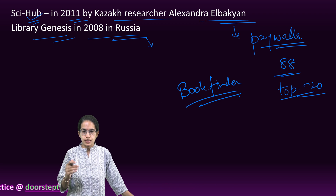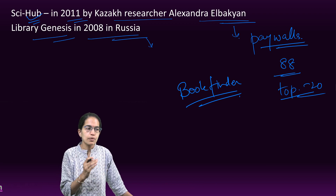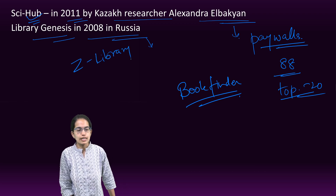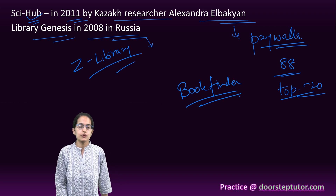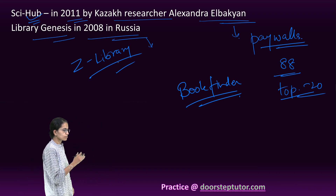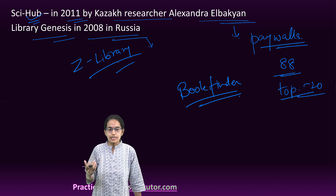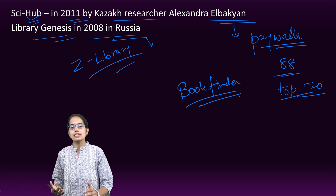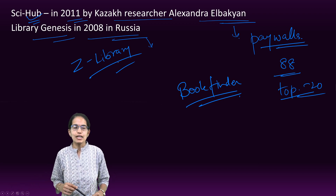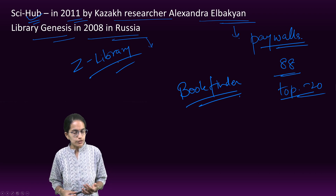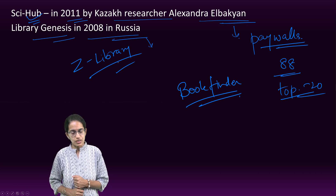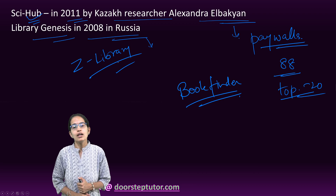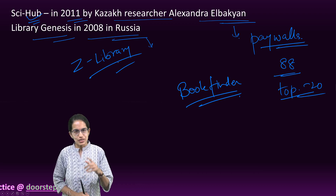Shadow libraries like Sci-Hub, Library Genesis, Z Library, and Anna's Archive are extremely important to note. They are online databases but have been considered illegitimate or illegal in many nations, with severe restrictions on their existence. Understanding shadow libraries is an important concept for your upcoming NET examination, and based on the 2023 recent papers, numerous updates have been brought to the video lecture series available in the link below. Thanks for joining in.